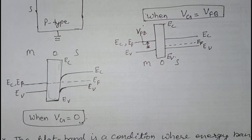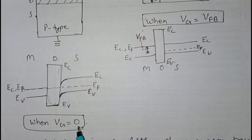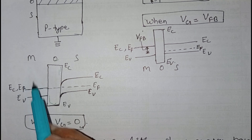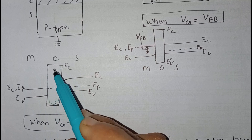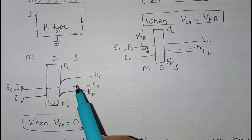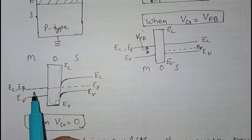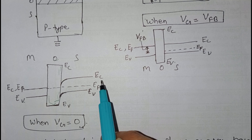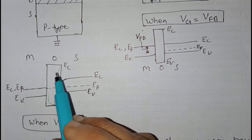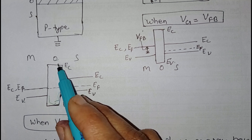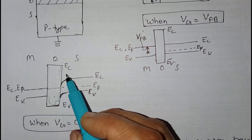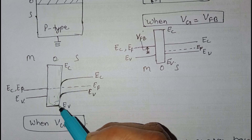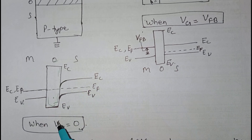Now if we do not apply flat band voltage — when Vg equals zero — the energy band diagram will look like this. The metal side is shown on the left, then the oxide layer rectangle, then the substrate side. We can see the conduction band, valence band, and Fermi level on both sides. At the interface, the band is bending.